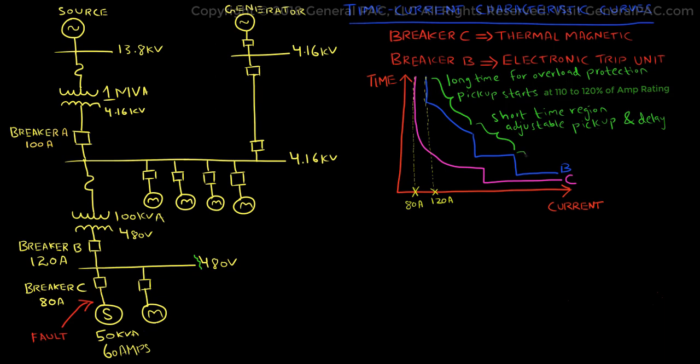And finally, we have the instantaneous region that can trip the breaker very quickly, requiring only a few cycles. Both the short-time and instantaneous regions are for protection against high fault currents.